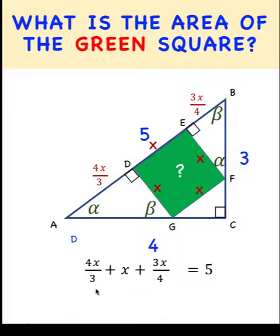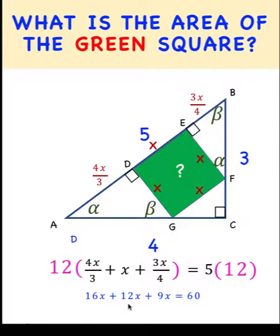To simplify this, we can multiply both sides of this equation by the least common denominator of 12. Distribute this, 12 divided by 3 equals 4 times 4x equals 16x. 12 times x is 12x. 12 divided by 4 is 3 times 3x is 9x, equals 5 times 12, 60.